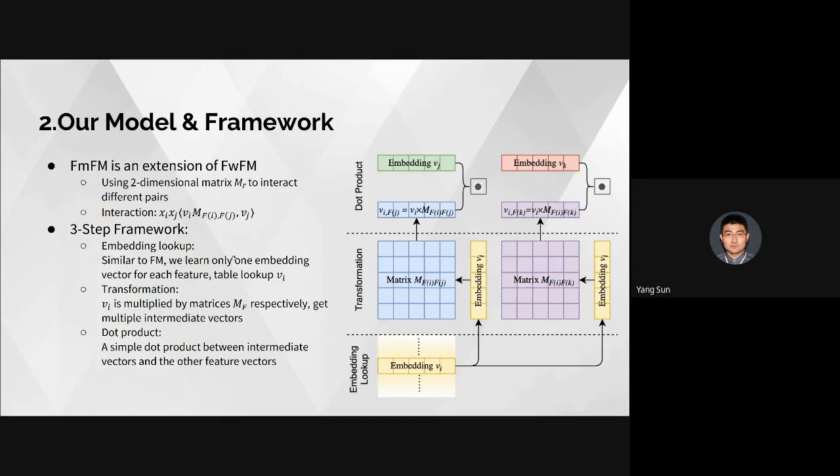The last step is dot product — a simple dot product between intermediate vectors and the other feature vector. For example, on the left side, the green vector vj dot products with vi for field j. On the right side, the pink and purple vk dot products with vi for field k.